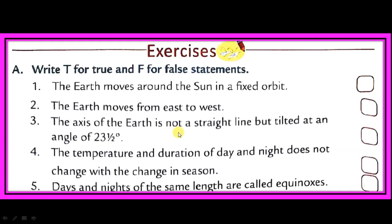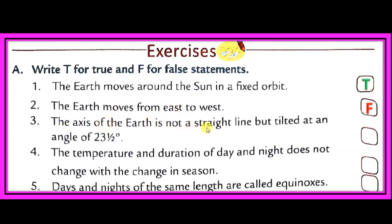Exercise part A. The earth moves around the sun in a fixed orbit — that will be true. The earth moves from east to west — that will be false. It moves from west to east. The axis of the earth is not a straight line but tilted at an angle of 23.5 degrees — that will be true.